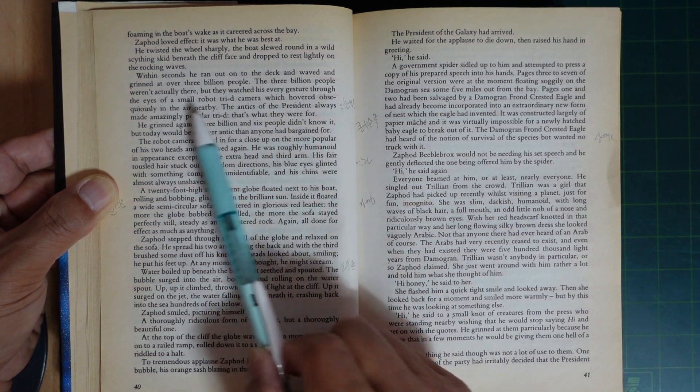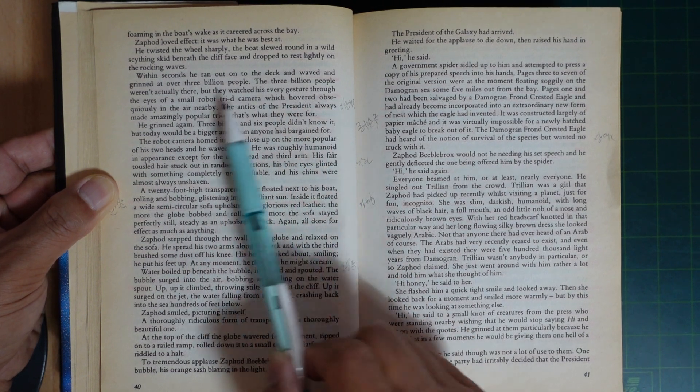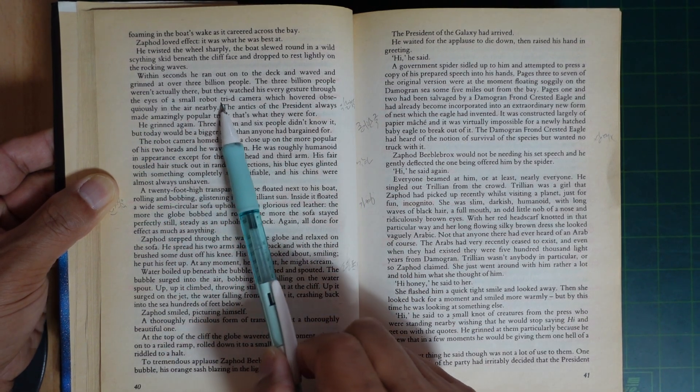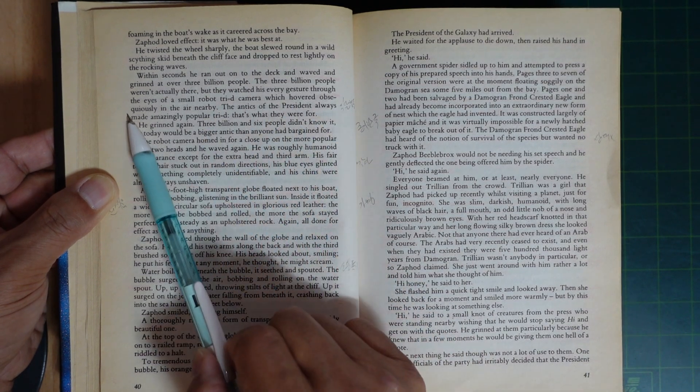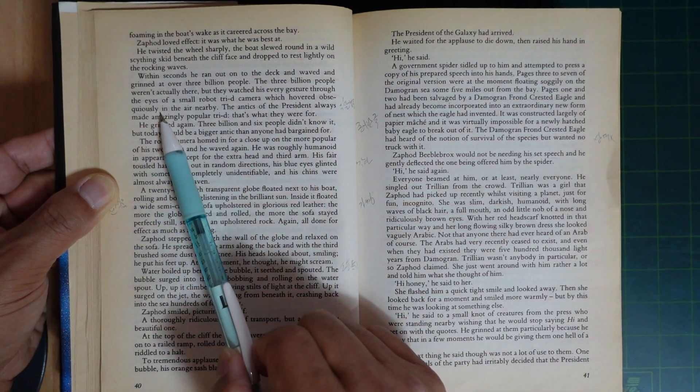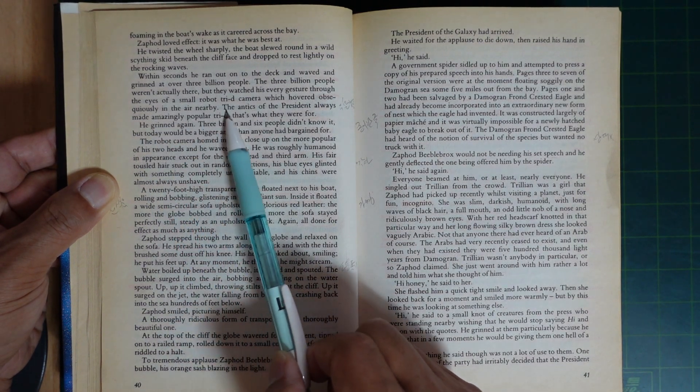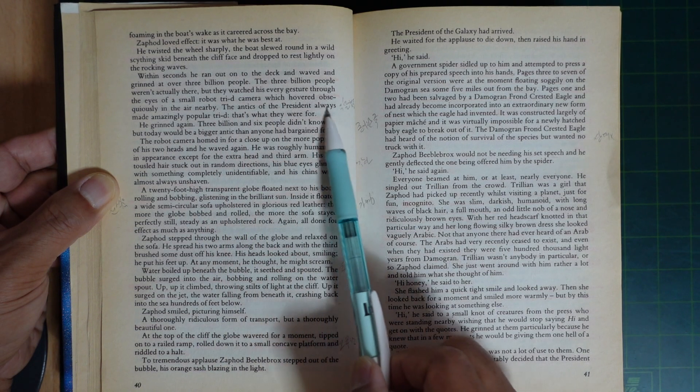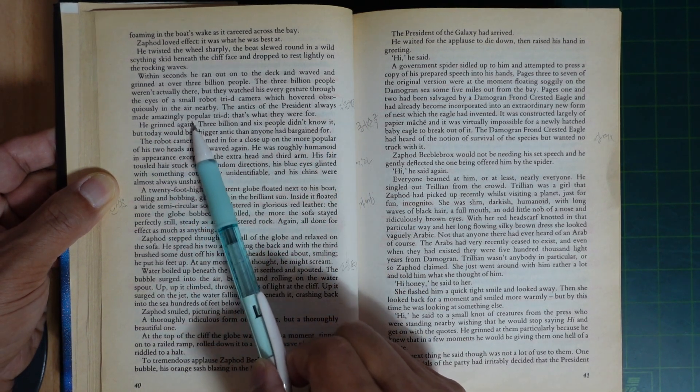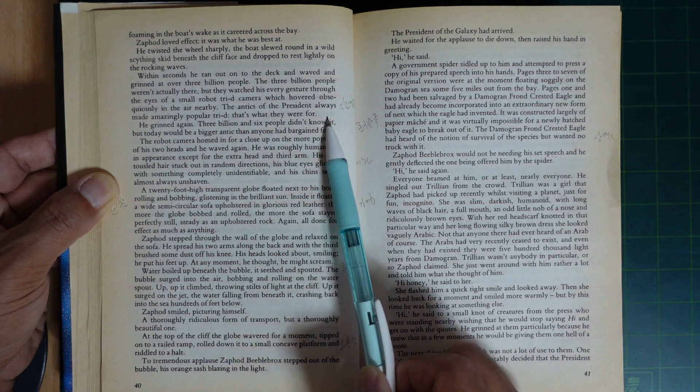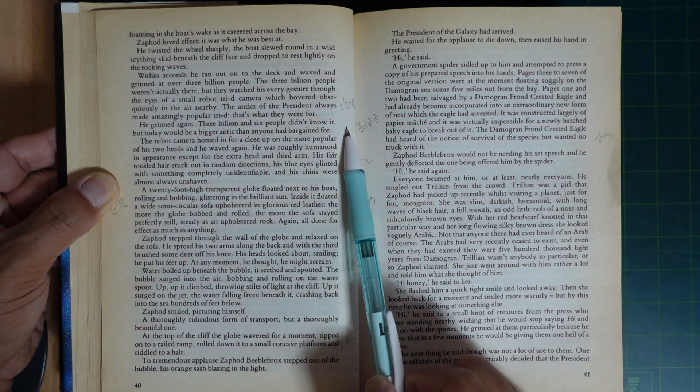The three billion people weren't actually there, but they watched his every gesture through the eyes of small robots, 3D cameras which hovered obsequiously in the air nearby. The antics of the President always made amazingly popular 3D. That's what they were for. He grinned again.